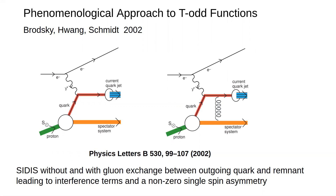In 2002, Brodsky, Huang, and Schmidt generate a non-zero single spin asymmetry produced by the interference between two terms: one in which the outgoing quark and remnant exchange a gluon, and one in which they do not. In this model of QCD, the non-zero element of the cross-section is one proportional to the triple product.